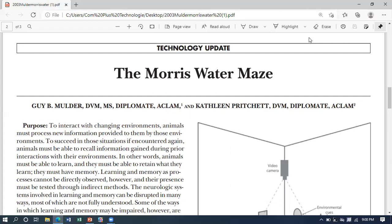This is my research article, the Morris Water Maze. First, I am discussing the purpose. Whenever an animal interacts with a new environment, the animal processes new information. If the animal encounters that environment again, it recalls the information. In other words, an animal must be able to retain its memory - what they have learned. We check their learning and memory by indirect methods. Sometimes learning and memory of animals are disrupted due to lesions in different parts of the brain.